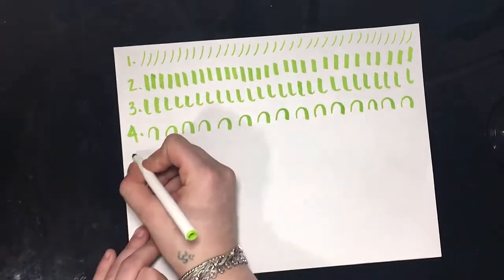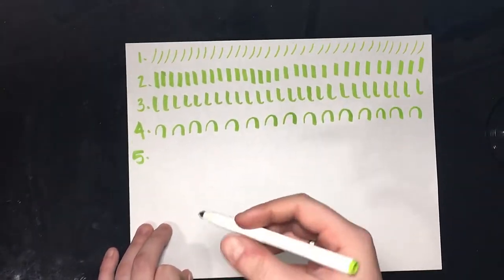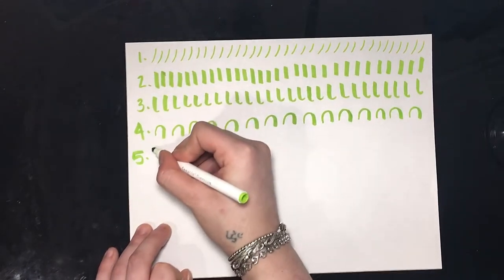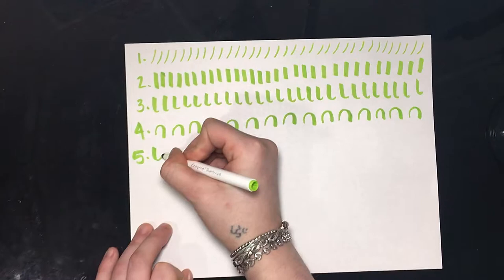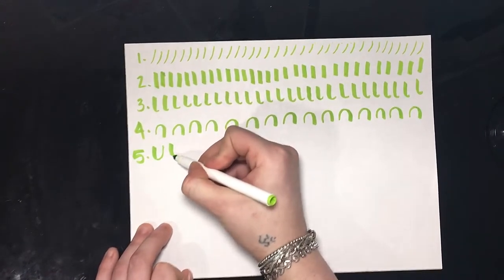And then our next one is going to be the opposite of this one. So you're going to make a thick down stroke and a thin up stroke to make a U shape.